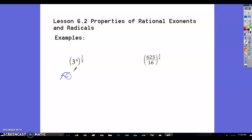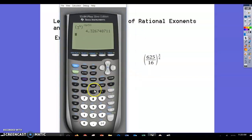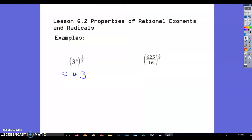And you can do the same thing with the next one as well. So, you can just type it in. Let's do parentheses, and we're going to do 625 divided by 16. And then we're going to raise that to the three-fourths power. And that's going to be about 15.625. So that's just a couple examples using your calculator to plug those in.